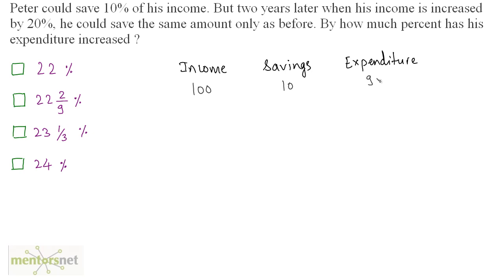Income minus savings always gives you expenditure, so expenditure is 90. After 2 years Peter's salary increases by 20%, so 100 becomes 120. He could only save the same amount as before, so savings are again 10. The expenditure is income minus savings, which is 120 minus 10, that is 110.